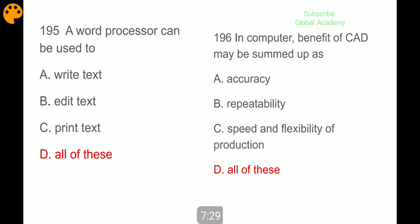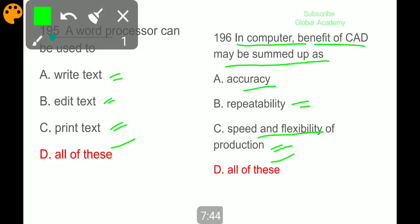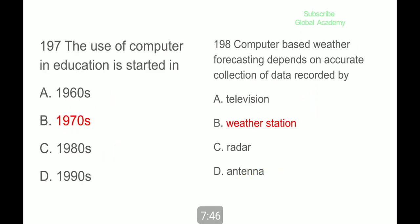Characteristics of the computer are accuracy, repeatability, speed, and flexibility of production, all of the above. The use of computers in education started in the 1970s. Computer-based weather forecasting depends on accurate collection of data recorded by weather stations.